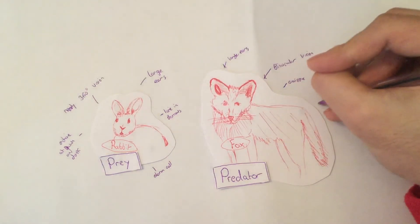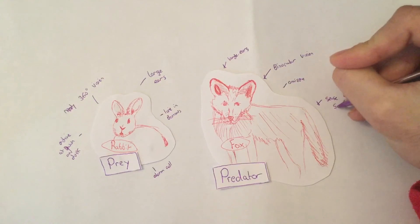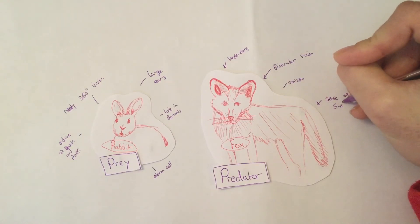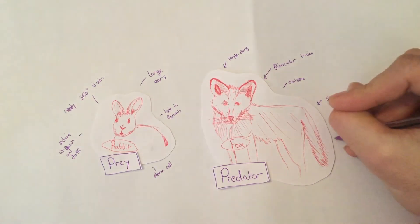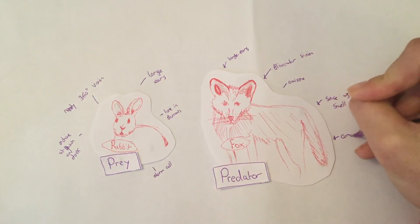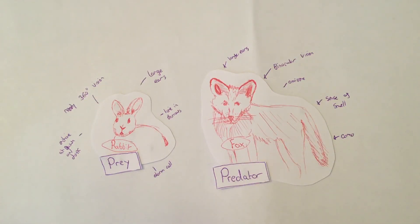The fox also has a really good sense of smell, far better than ours, and that is very useful for locating prey. The final adaptation is camouflage — the fox is camouflaged to its environment, and it's very difficult to see a fox when it is in long grass, which helps it to hunt.